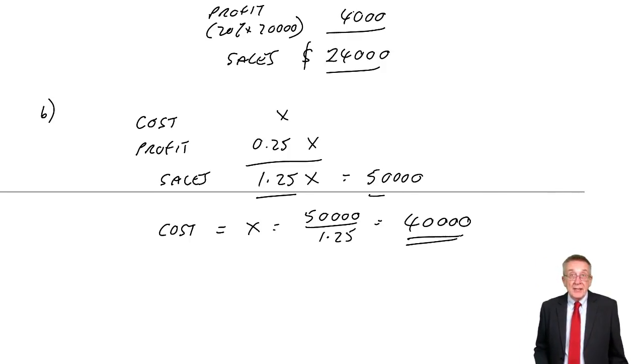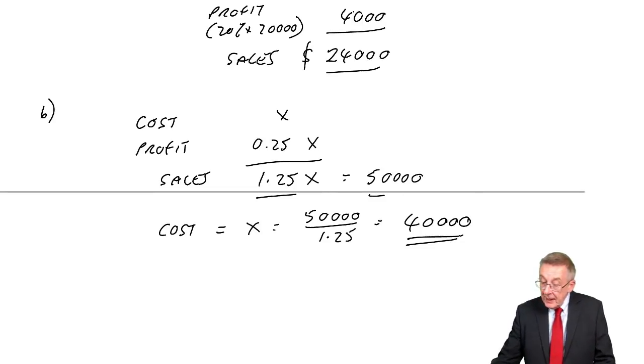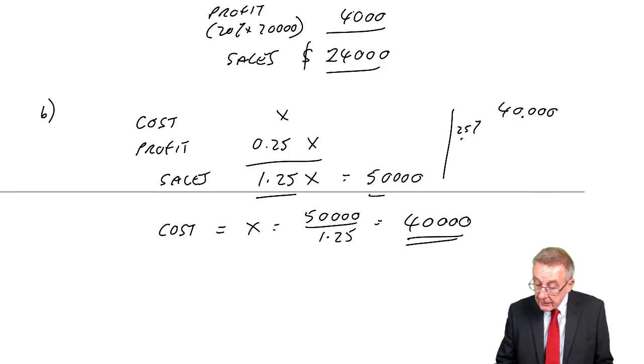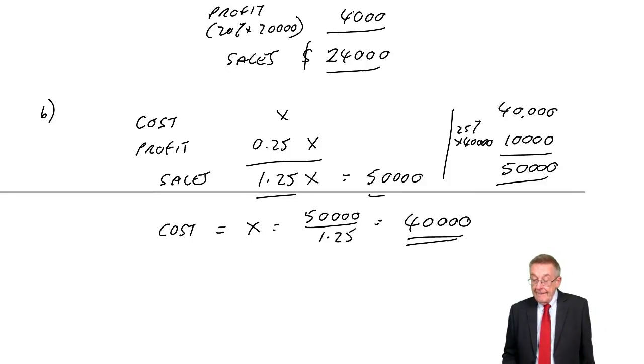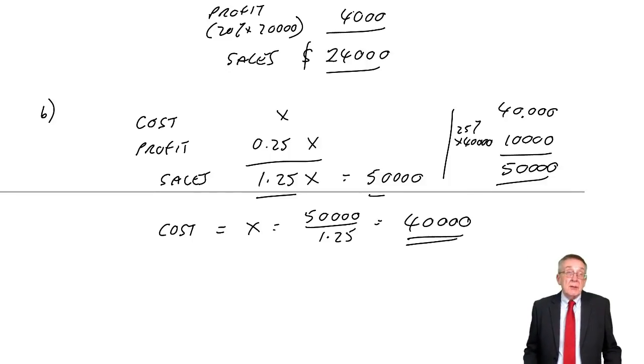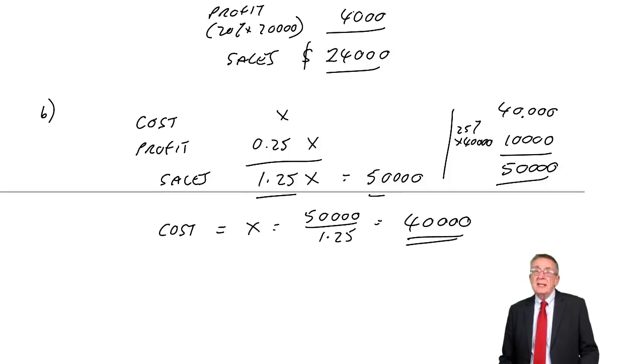And of course it checks, although don't waste time in the exam checking. You must make sure you're confident. But if the cost is 40,000, the markup, the profit, 25% of 40,000 is 10,000. It does indeed give us sales of 50. Now, how you do it when you're going backwards is up to you. And it is one of those things where some people find this terribly obvious and can't understand why anybody has a problem. Other people do find this tricky and can't understand why anyone can find it easy.